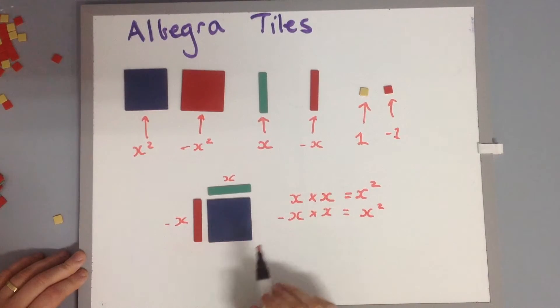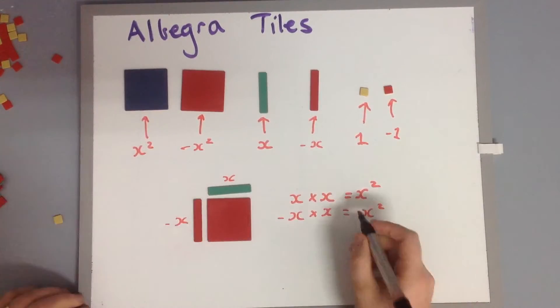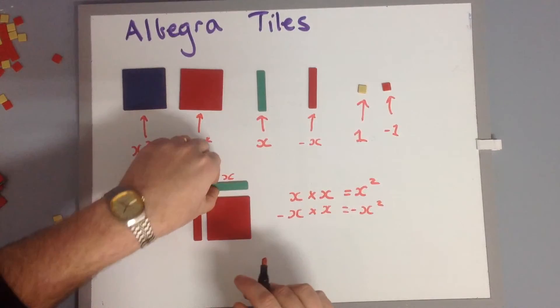But from our work on directed numbers, we've got a negative number times a positive number, which will actually give us a negative answer. So our answer with that would be negative x squared.